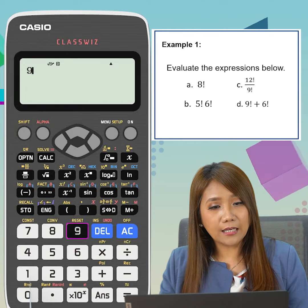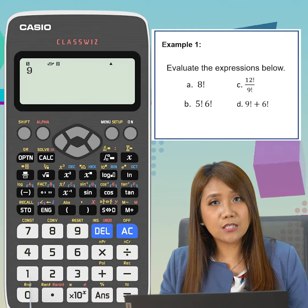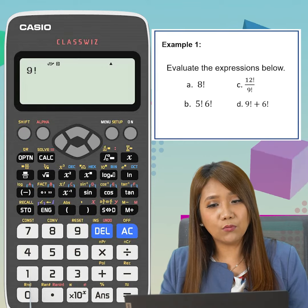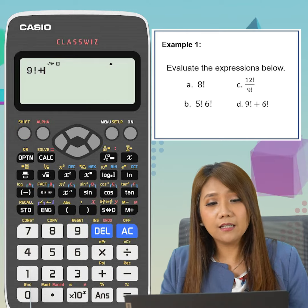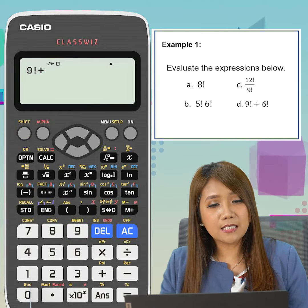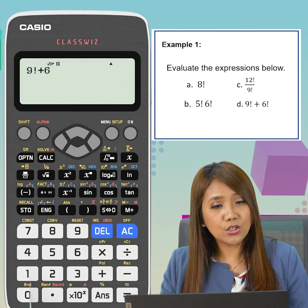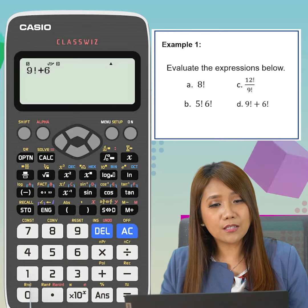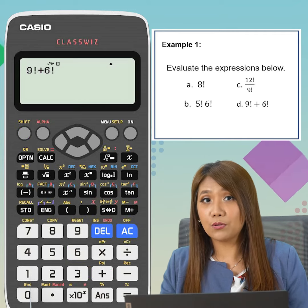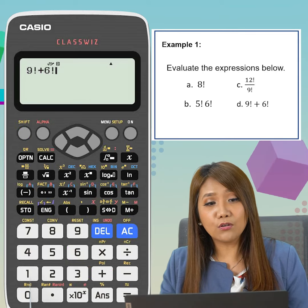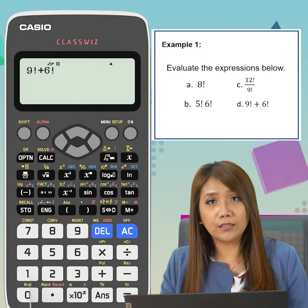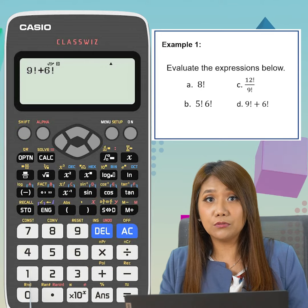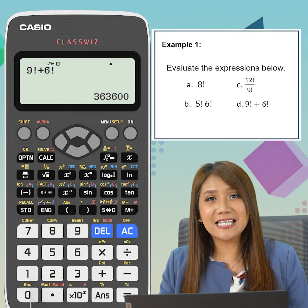For our last example, we need to key in 9, shift x raised to negative 1 for factorial. We click on plus sign, followed by the next expression which is 6, shift x raised to negative 1 for factorial. And the value of 9 factorial plus 6 factorial is equal to 363,600.